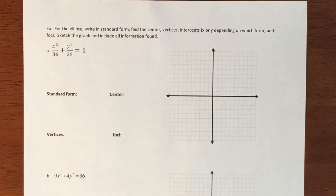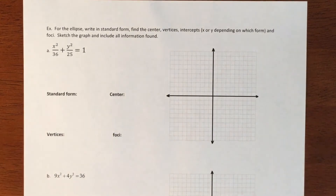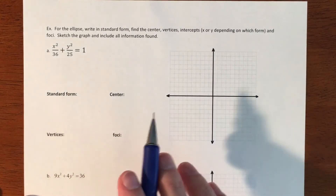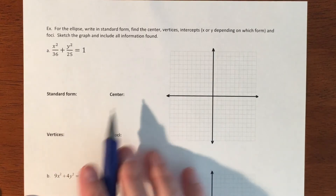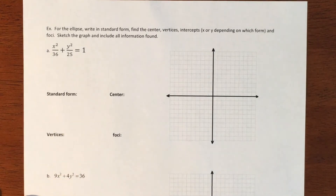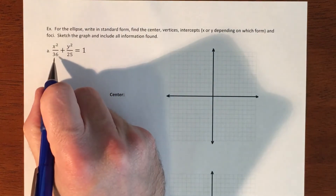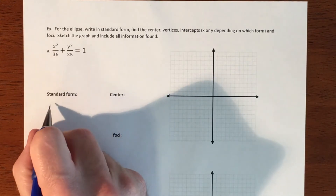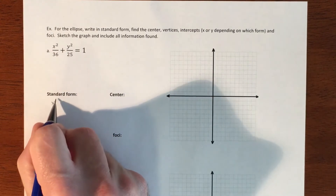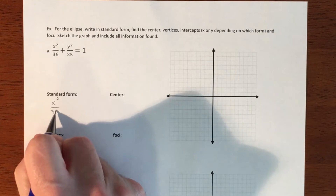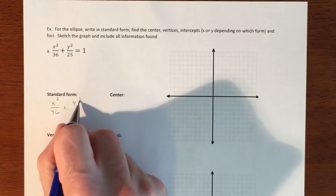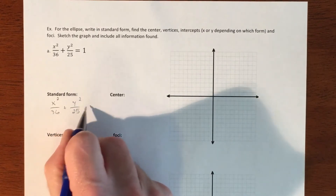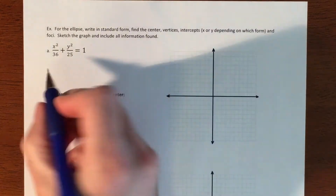In this video we are going to graph two different ellipses and plot all the points. We're going to figure out the standard form, adjust for the center, vertices, and focal points. First, we want to make sure we have standard form, which looks like x squared over 36 plus y squared over 25 equals 1. That is already standard form, so nothing to adjust.